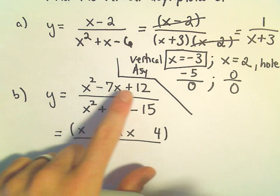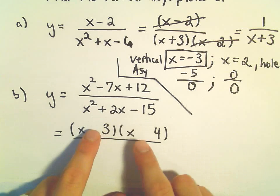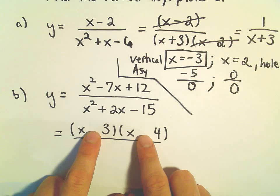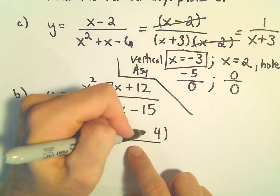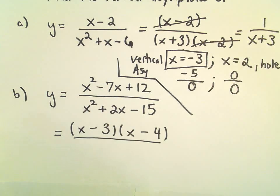And since they have to multiply to a positive, I either need two negatives or two positives. But since the middle sign is negative, they would both have to be negative. So, maybe we can factor the denominator as well.